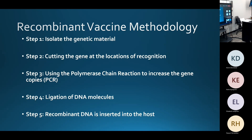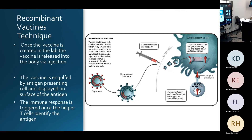The methodology of recombinant vaccine production involves five steps: first, isolate the genetic material; second, cut the gene at recognition locations; third, use polymerase chain reaction to increase gene copies; fourth, ligation of the DNA molecules; and fifth, the recombinant DNA is inserted into the host. Once created in the lab, the vaccine is injected into the body, engulfed by the antigen-presenting cell, and displayed on the surface of the antigen. The immune response is then triggered by helper T cells to identify the antigen and combat future exposures.